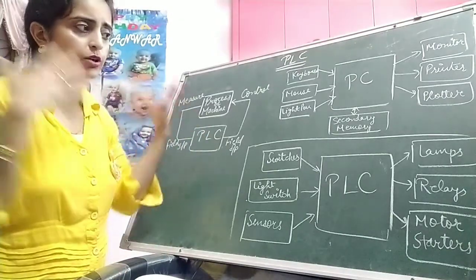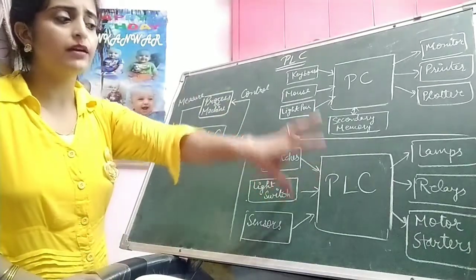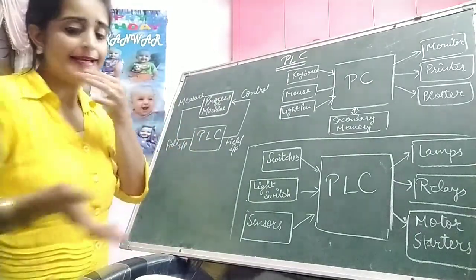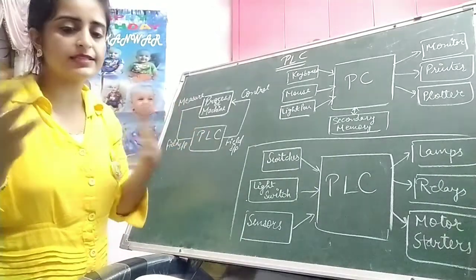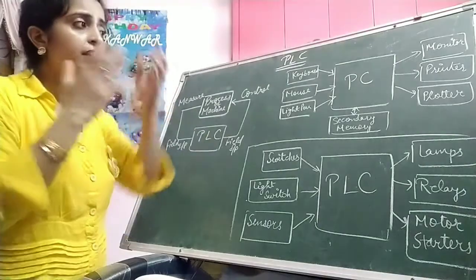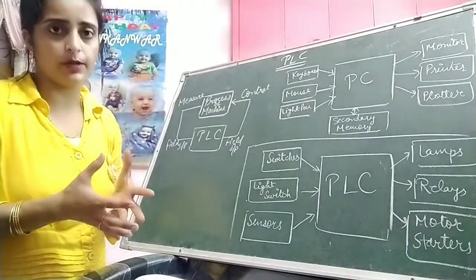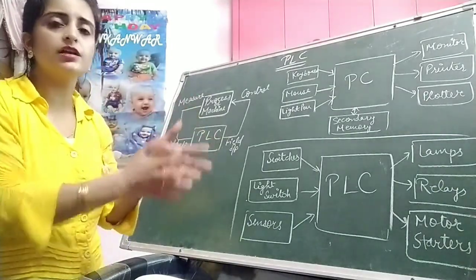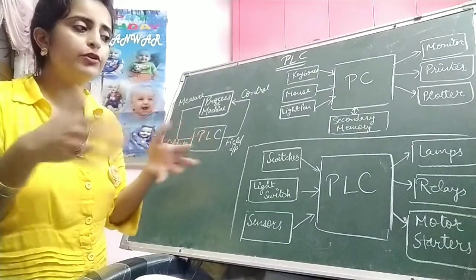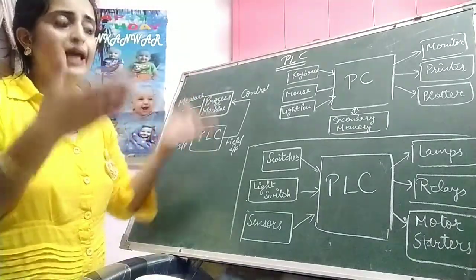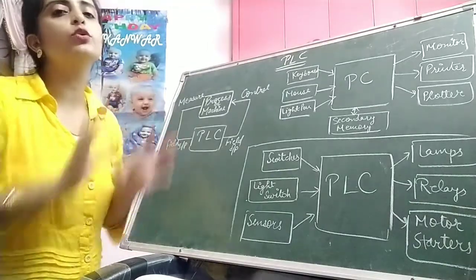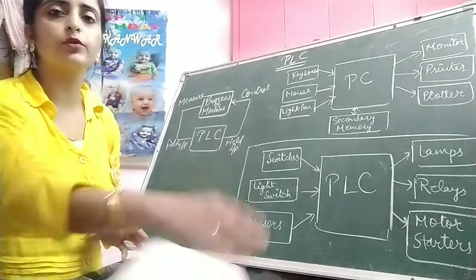PLCs have a limited memory size compared to computers but have fixed software for a particular PLC. The PLCs do not have as much memory as PCs, but we can use a fixed software so that its memory could be enhanced. Theoretically, microprocessor and microcontroller-based systems are similar to the PLC. The PC follows the multitasking phenomenon. Similarly, in PLCs we can also use multitasking, but we have to make it in a sequence as in any programming language. Its programming is so simple that even a kid could do it.